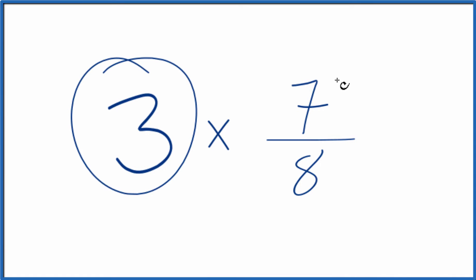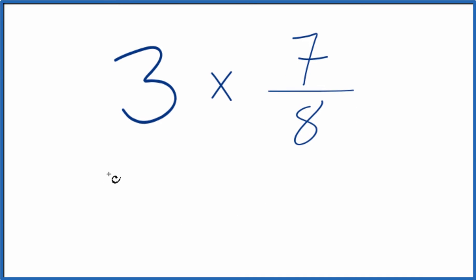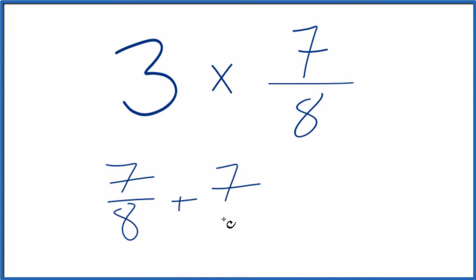Let's multiply 3 times 7 eighths. Here's how you do it. So first off, you could just add 7 eighths together 3 times, like this.